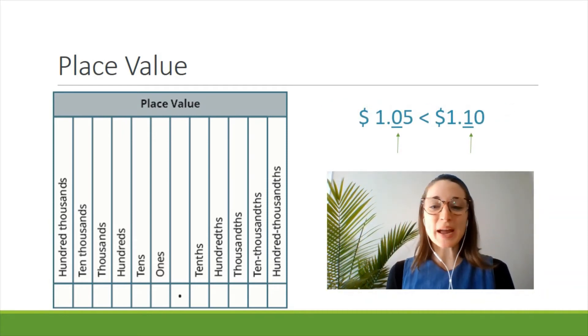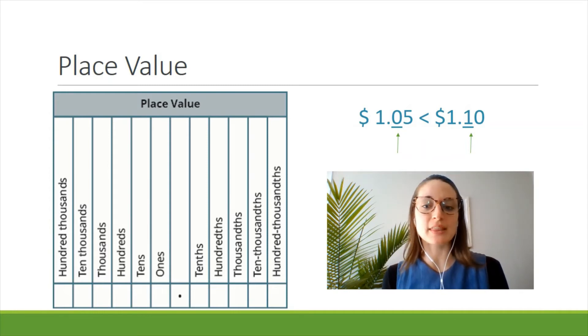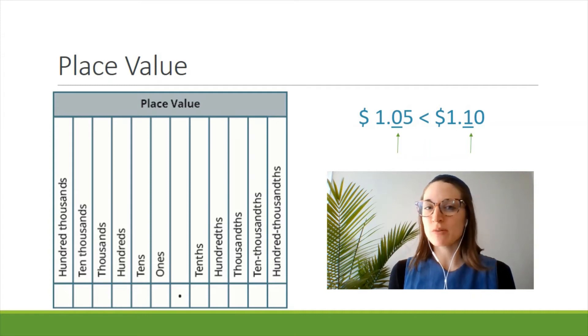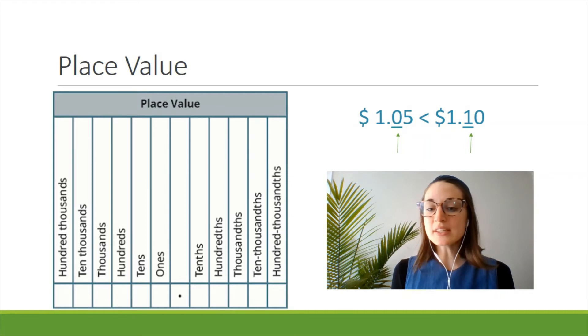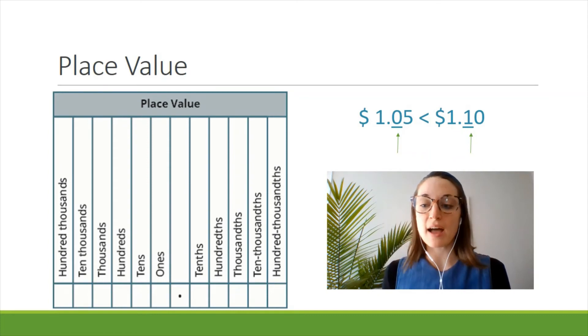When we look to the right of the decimal, the numbers that fall closer to the decimal point are larger than the numbers that are farther away. An easy way to remember this is to think about money. If you have $1.05 and your friend has $1.10, who has more money? Your friend! So even though one is smaller than five, we have to look at what's closer to the decimal place. In the tenths column, one is greater than zero.